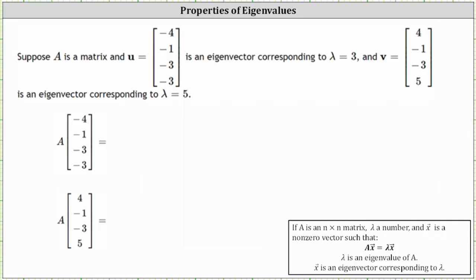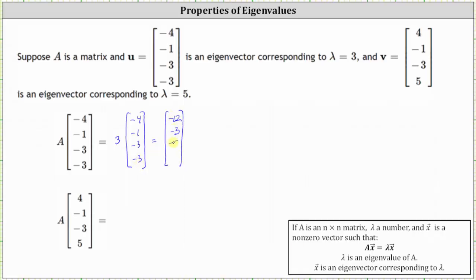Matrix A times vector U is equal to the eigenvalue of three times vector U, which is equal to the vector negative 12, negative three, negative nine, negative nine.